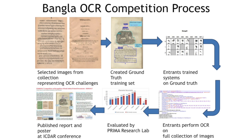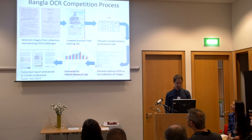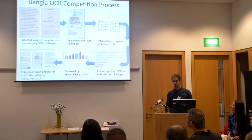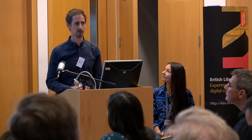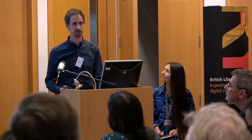To try to overcome all of that, we launched a competition last year which surveyed the landscape of optical character recognition for Bengali texts and reviewed state-of-the-art solutions. We transcribed a number of the texts as ground truth, gave this to competition entrants who trained their OCR systems, fed them more images, and the results were analysed by the Prima Research Lab at the University of Salford, who found that Google performed best — with 75% character accuracy on Bengali. We're now continuing to work with Google to improve these results and expand the breadth of material we provide.